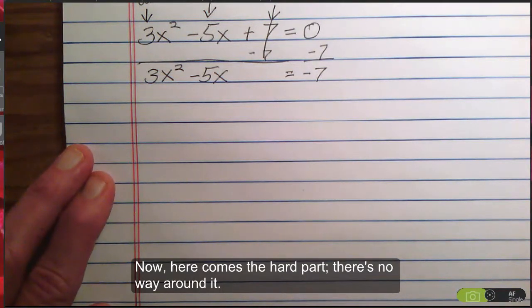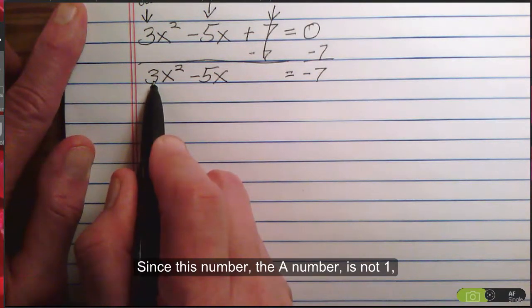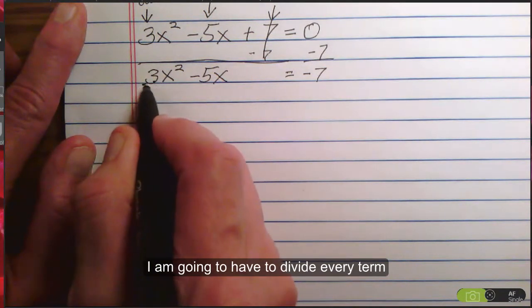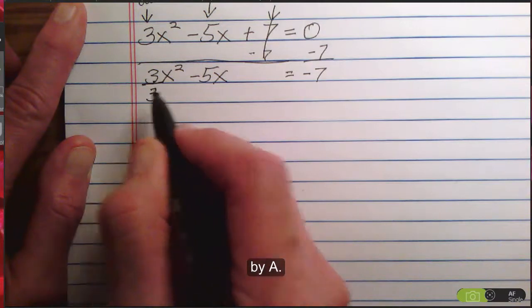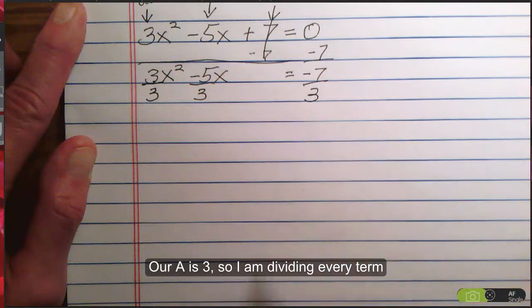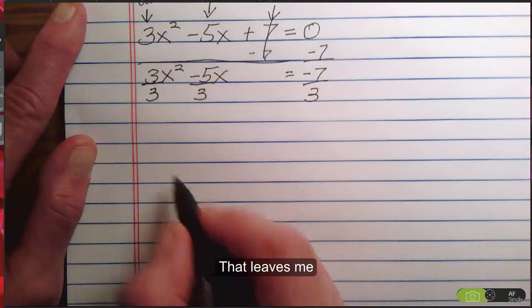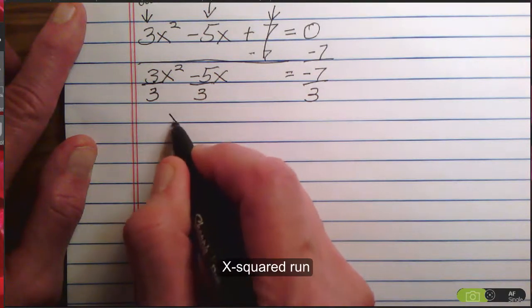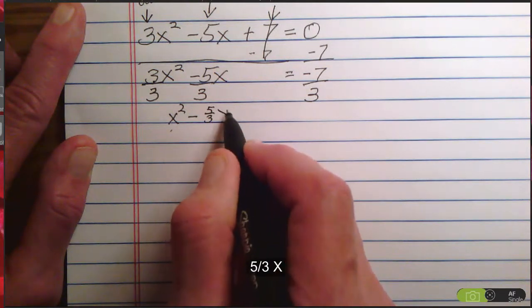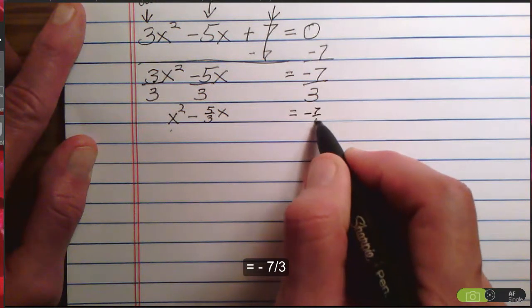Now, here comes the hard part. There's no way around it. Since this number, the A number, is not 1, I am going to have to divide every term by A. And our A is 3, so I am dividing every term by 3. That leaves me x² - 5/3x = -7/3.